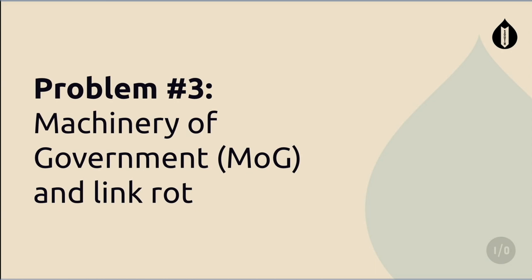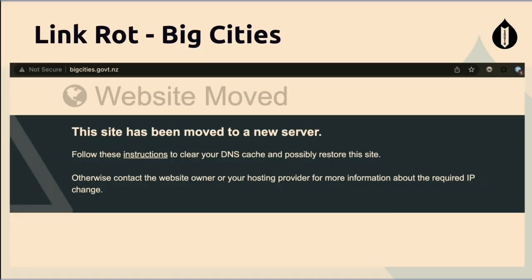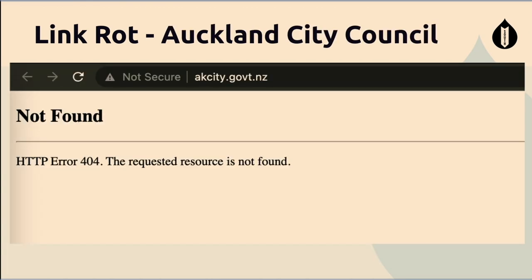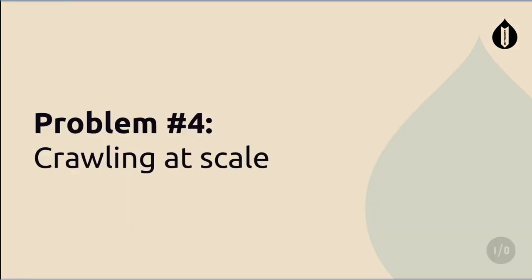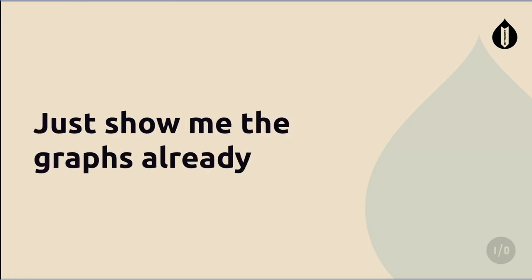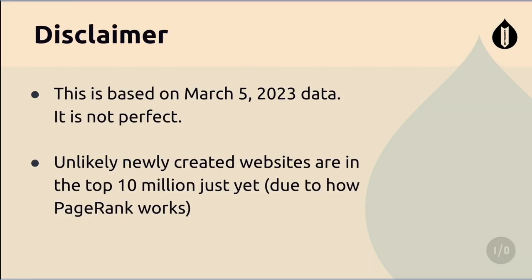Just like in Australia, New Zealand is also victim of link rot and 'mogs'. A few examples: big cities have moved their domains without telling anyone; Auckland City Council can't be found especially when it's flooding; and LINZ gets bonus points for their error page. Crawling at scale was also an issue — a lot of New Zealand government domains have Akamai sitting in front, and Akamai and my home IP are not friends anymore, so we had to switch to dynamic IPs a few times.